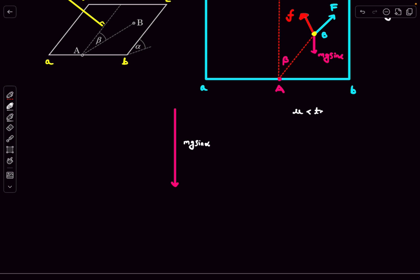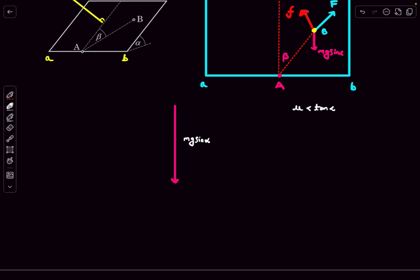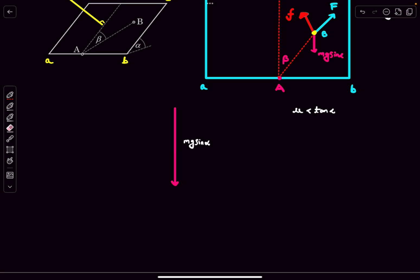This actually tells us something important. We know that the force of friction f is constrained to be less than mu times the normal reaction, and the normal reaction is just mg cos alpha. This whole thing is going to be less than, instead of mu, if I substitute tan alpha, what you get is mg sin alpha.